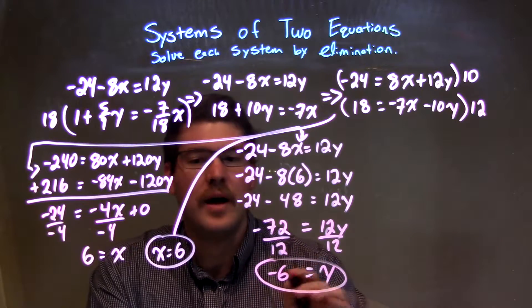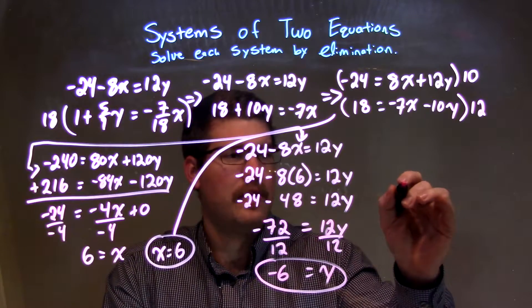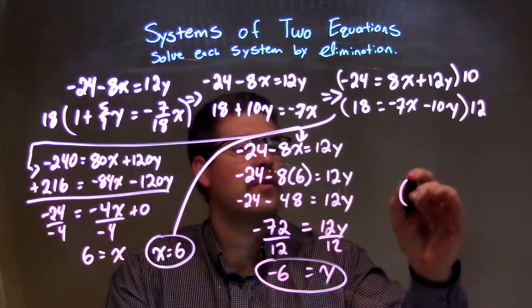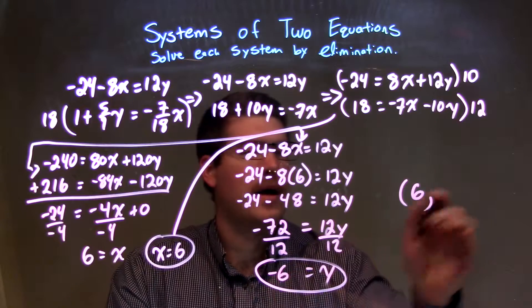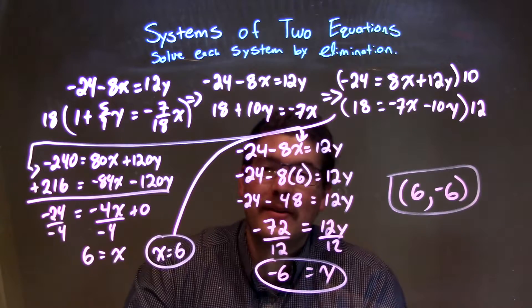So, we have x as a positive 6, y as a negative 6. Our final answer is x is 6, y is negative 6. And that is our coordinate point and our final answer.